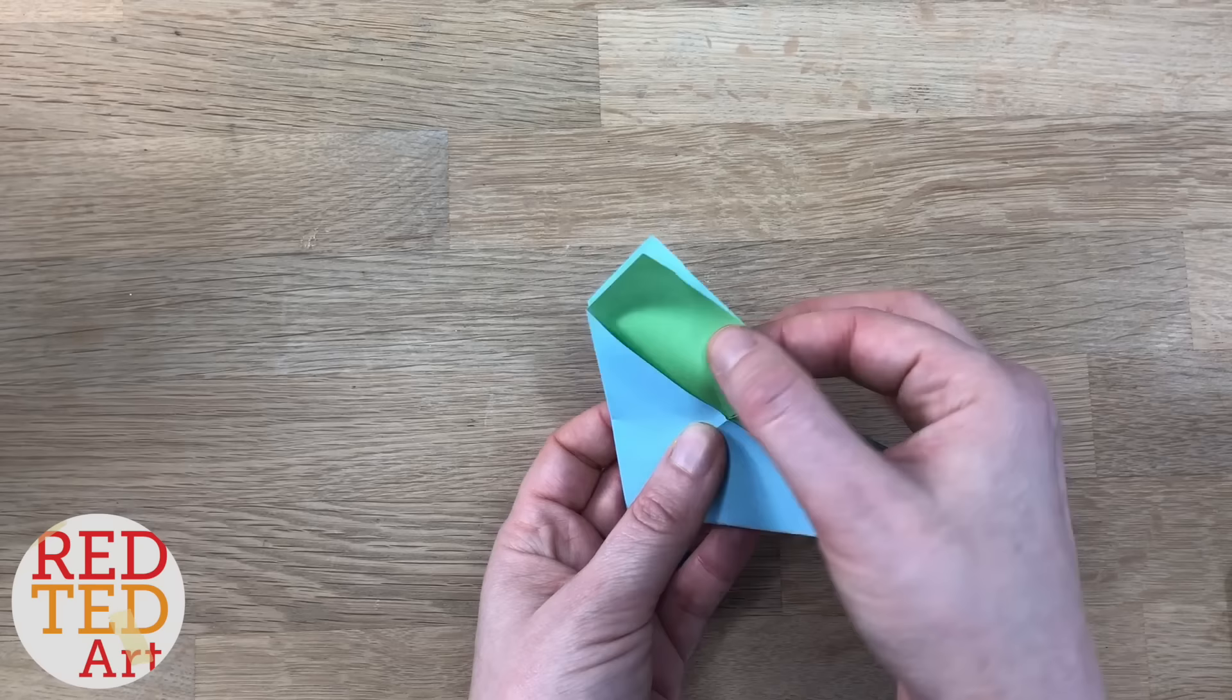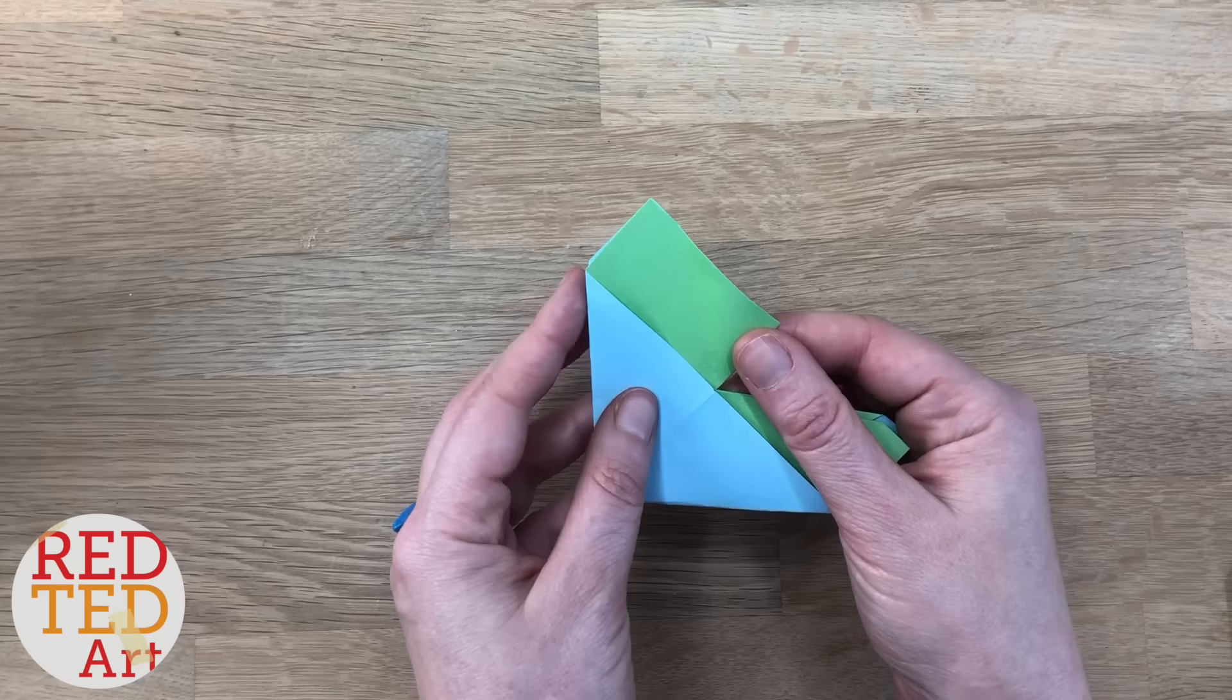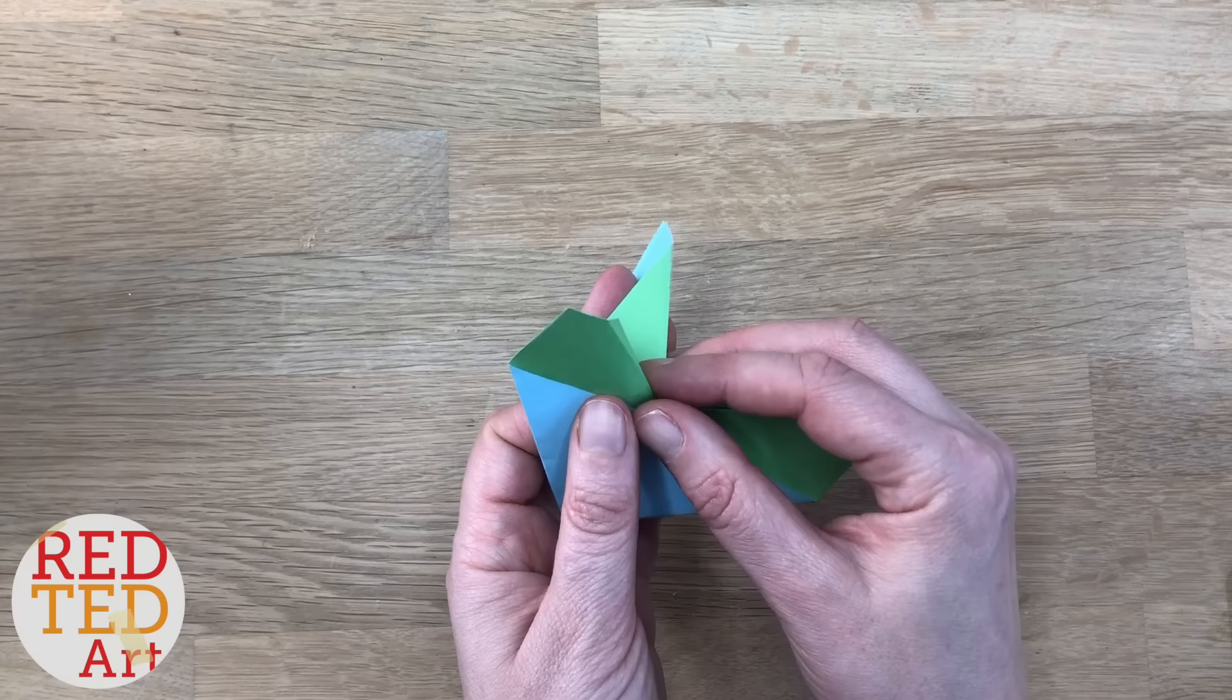Fold open, and now you're going to pull this bit in and fold. Same on this side. I'm going to open it and just push it through. If the crease is neat, it will fold in really easily.